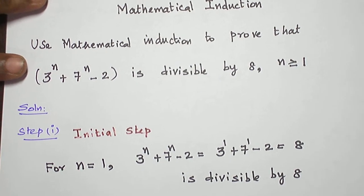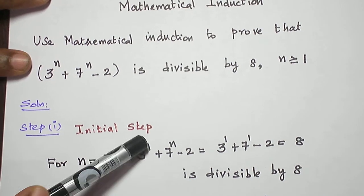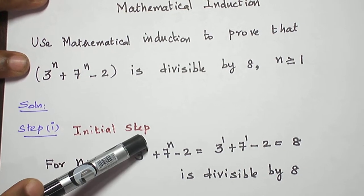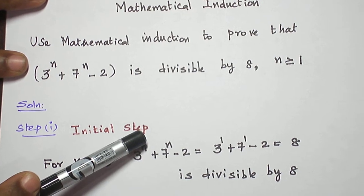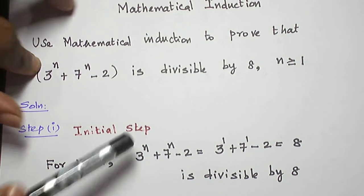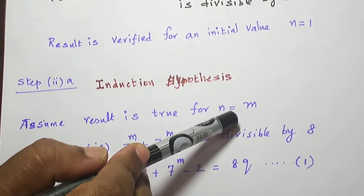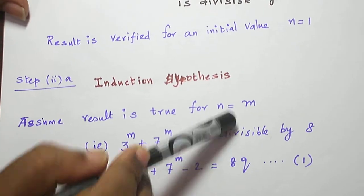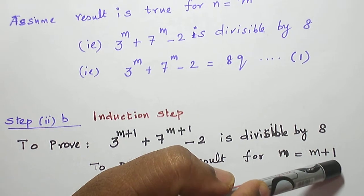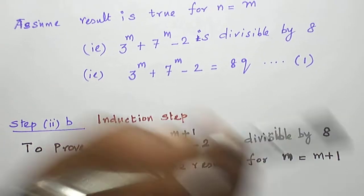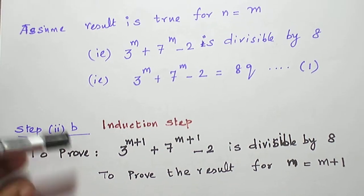We know that mathematical induction involves 3 steps. First of all, we have to prove the result for an initial value. Then we have to assume the result for n is equal to m. And finally, we have to prove the same result for n is equal to m plus 1. This is the overall idea of mathematical induction.